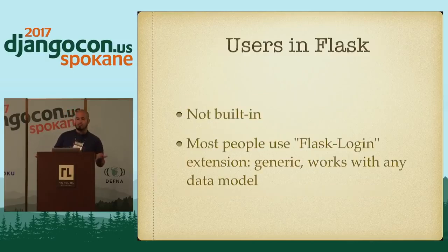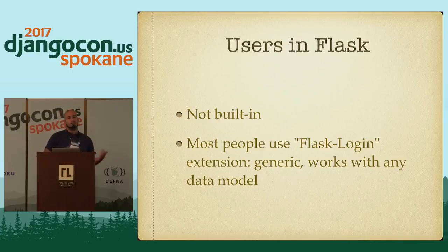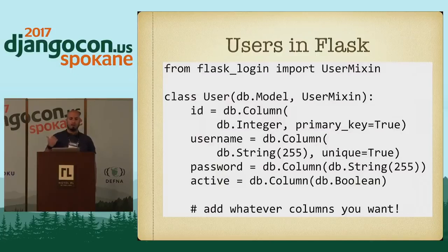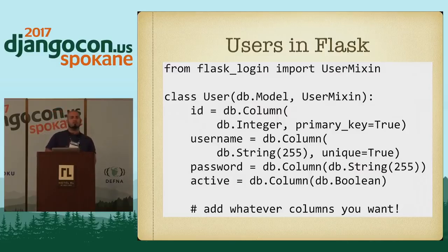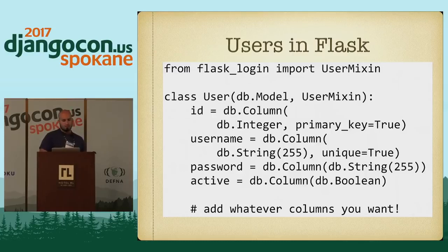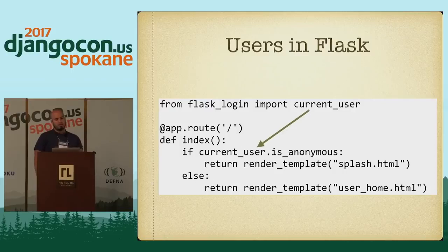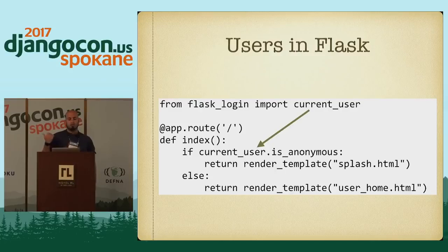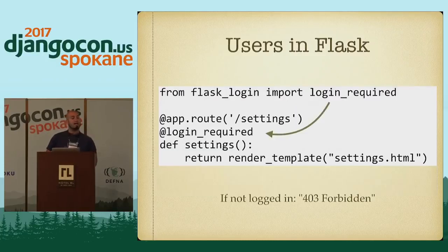So how do we do it in Flask? As you might imagine, you don't have users built in because you don't even have a data model built in. But there is a very popular Flask extension called Flask-Login, which is generic and works with just about any data model, including SQLAlchemy. Here's an example — I'm going to define a user class, and you can see I'm importing this UserMixin from Flask-Login. That gives it a couple of extra superpowers so that we have some standard usage across your framework, regardless of whether you're using SQLAlchemy or Mongo. So for example, in my route, I might say if current_user.is_anonymous — current_user is something provided by Flask-Login, a pointer to whatever user is currently logged in. So here's a simple view where I'm saying if you're anonymous, just render the slash page; otherwise, show the user homepage. Flask-Login will also give you a login_required decorator, which you've probably seen from Django as well.